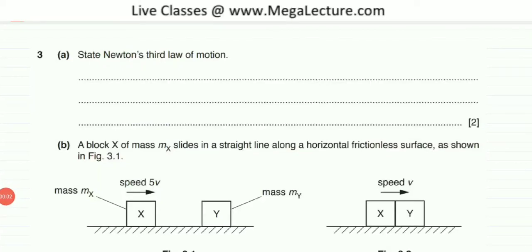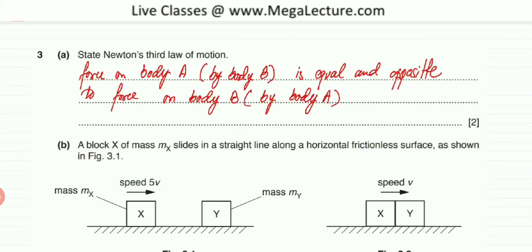The question asks us to state Newton's third law of motion. This third law states that the force on body A by body B — whether two bodies are colliding or at rest — is equal and opposite in direction to the force on body B by body A. So for every action or every force in nature, there is an equal and opposite reaction force.